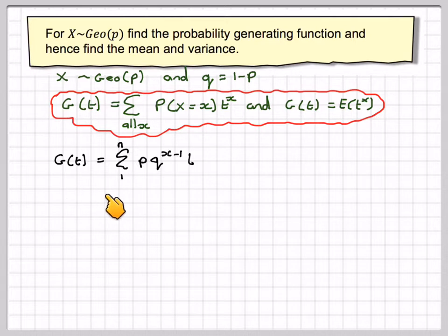G(t) will be from 1 to n of pq^(x-1), that's the probability that X equals x, times t to the x. So writing a few terms out, there's pt plus pqt squared plus pq²t³ plus etc.